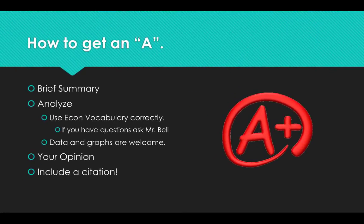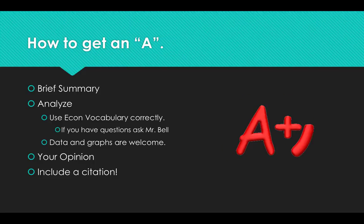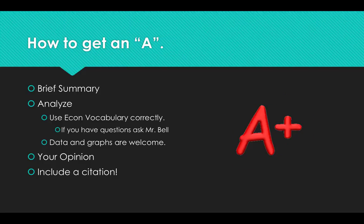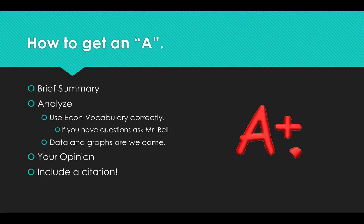How to get an A. This is the structure: give a brief summary of your article — keep it brief. I don't want the summary to be half of what you write; I can go read the article if I want detail. Just keep the first paragraph brief. Second, I want you to analyze — this may be a little longer than the brief summary. Use econ vocabulary that you're learning, and use it correctly. If you use econ vocabulary just to throw it in and it's not used correctly, you're definitely going to be marked down for that.